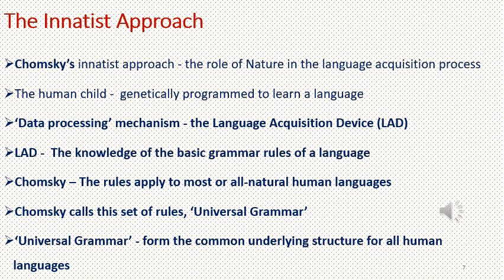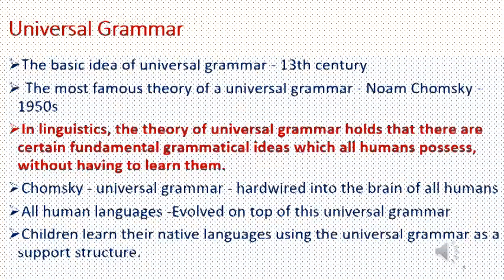Universal grammar is universal because these rules form the common underlying structure for all human languages. The basic idea of universal grammar has been around since the 13th century; however, the most famous theory was put forth by Noam Chomsky in the 1950s. The theory of universal grammar holds that there are certain fundamental grammatical ideas which all humans possess without having to learn them. Chomsky held that this universal grammar is hardwired into the brain of all humans, and all human languages have evolved on top of it.